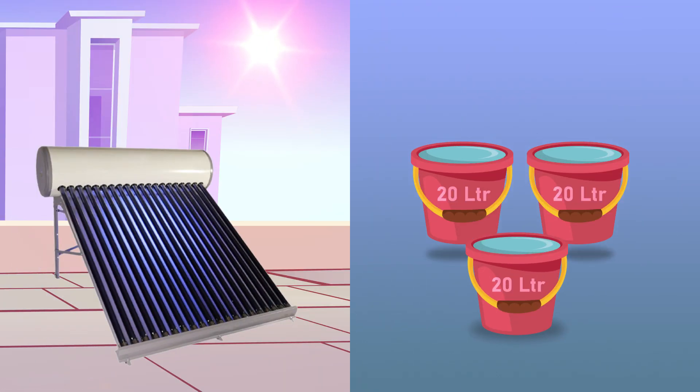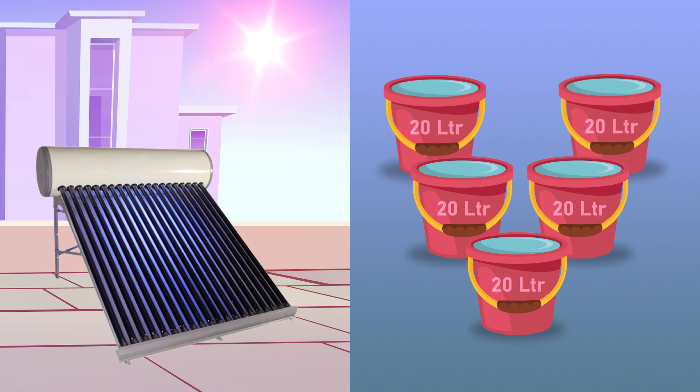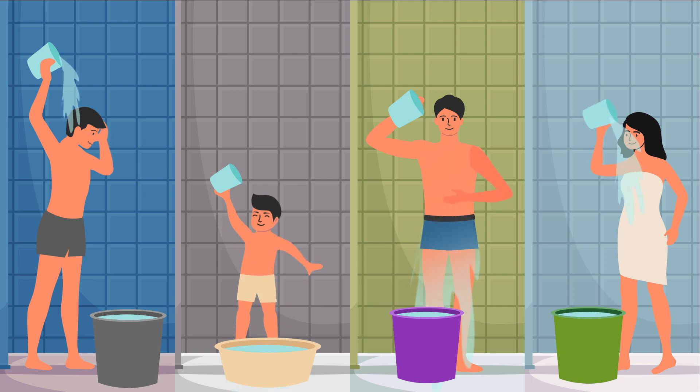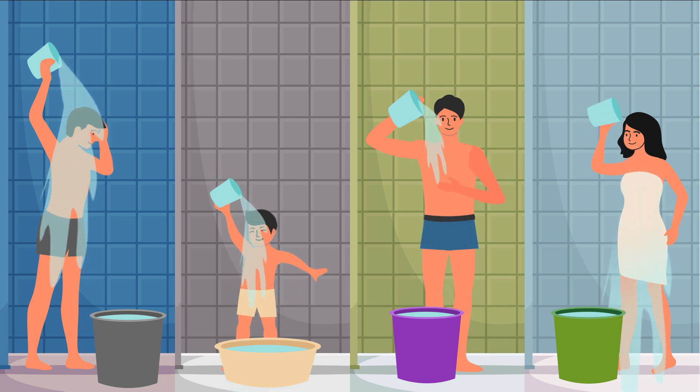Normally, hot water is enough for 3-4 people per day in a 100-liter solar tank. If the number of people increases, hot water is not available for the required time and temperature.